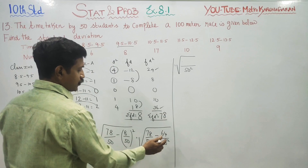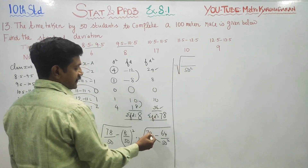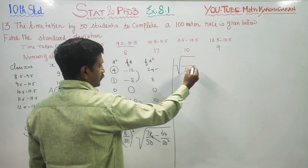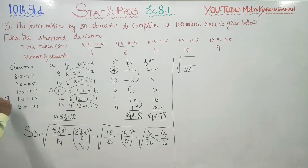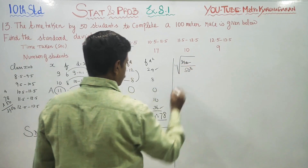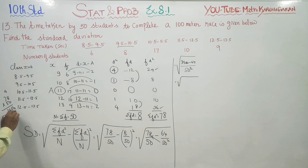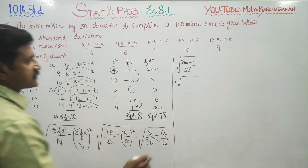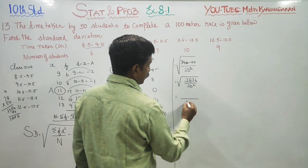Taking LCM as 50 squared, we cross-multiply: 78 into 50 = 3900, minus 64. So we get 3900 minus 64 = 3836. Therefore we have the square root of 3836 divided by 50 squared. The square root of 50 squared is 50, so we need square root of 3836 divided by 50.